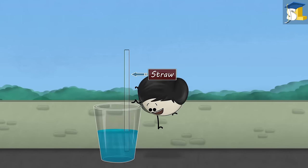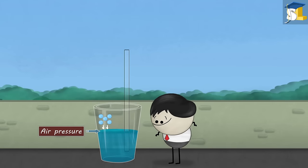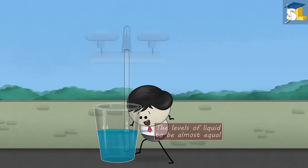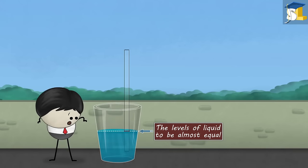Now, when a straw is in a liquid, the air pressure upon the liquid in the glass and the air pressure upon the liquid in the straw is similar, causing the levels of liquid to be almost equal.